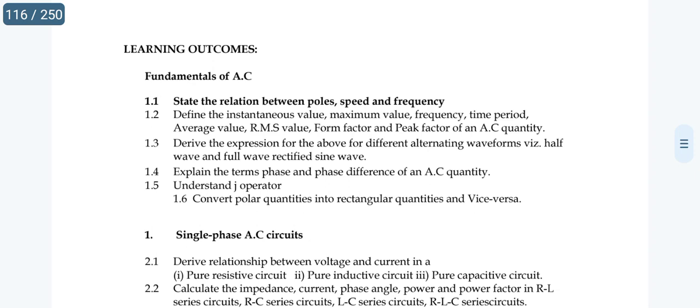For short answer questions, you need to write simple, brief, on-point answers. Choose question 1.1: state the relation between poles, speed, and frequency. That is a short answer question — simple sentences, briefly, on to the point.